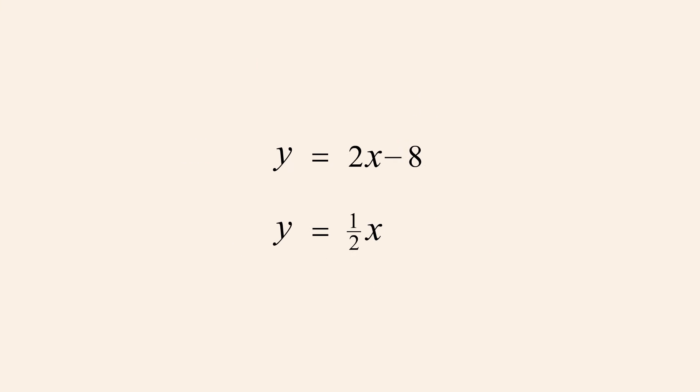Each equation tells us something about the relationship between x and y. For example, the second equation tells us that the value of y must be equal to one-half the value of x. Since we know that the value of y must be one-half x, we can substitute one-half x for y in the first equation.